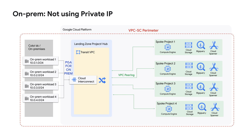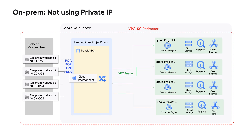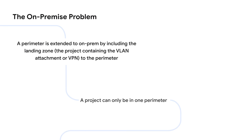If we look at a sample hub-and-spoke architecture, the landing zone containing the VLAN attachment is included in the perimeter, and PGA for on-prem allows traffic to managed services to traverse the interconnect and land inside the perimeterized environment. On-prem is thus part of the perimeter, and you don't need to allow-list those flows. This is what we call a macro or mega perimeter architecture, and it works well for a majority of customers.